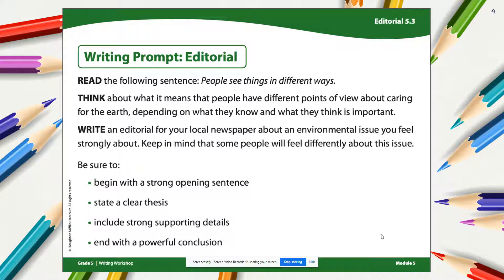Today we will be focusing on stating a clear thesis and the prompt in general. The prompt is asking you to write an editorial for your local newspaper about an environmental issue that you feel strongly about. This makes me think about the book we read — Aaron cared for an elephant, but his neighbors thought that the elephant was dangerous and took food from humans. So people can feel differently about environmental issues, and there can be good arguments on both sides.